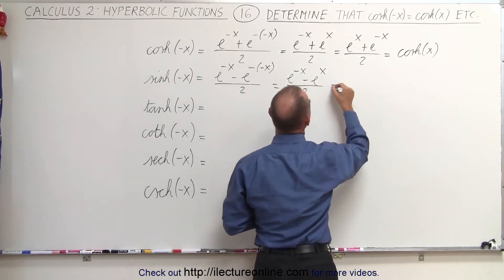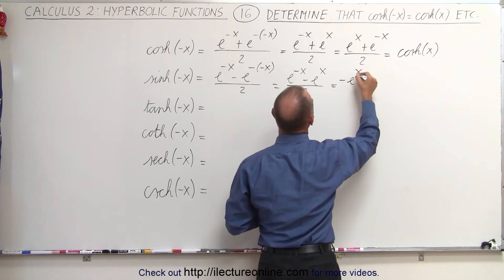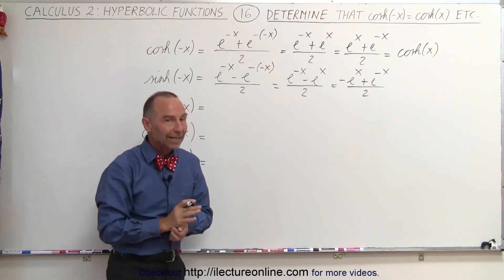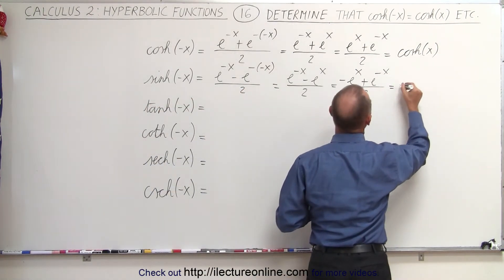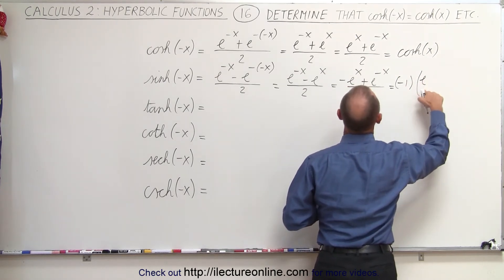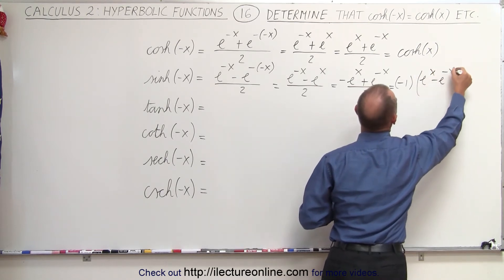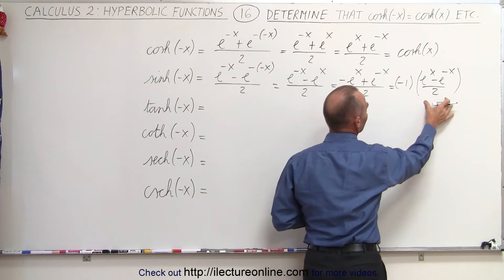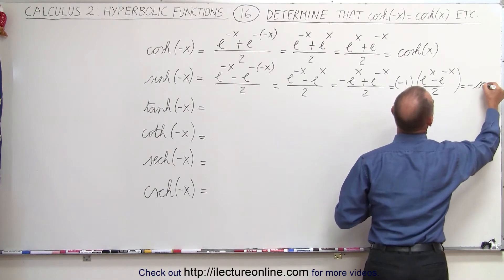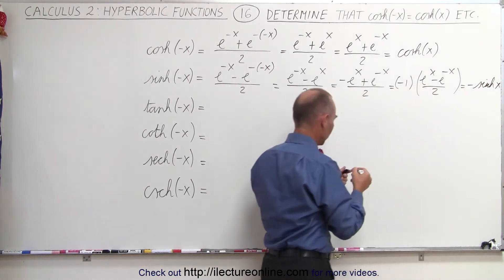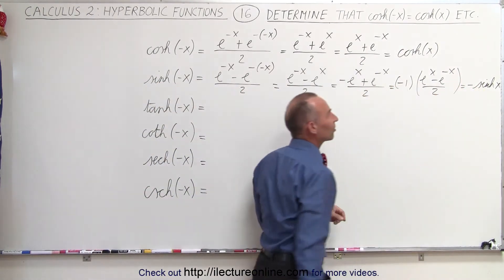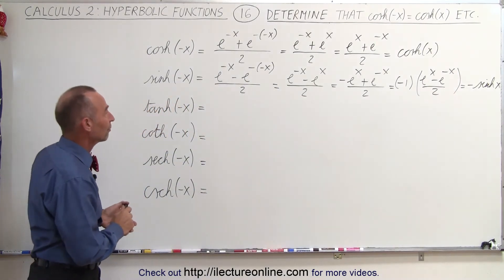When we switch them around, this becomes equal to minus e to the x plus e to the minus x, divided by 2. And then if we factor out a negative 1, this becomes negative 1 times e to the x minus e to the minus x, divided by 2. And of course this is exactly equal to the hyperbolic sine of x, so this becomes minus the hyperbolic sine of x. The hyperbolic sine of a negative x is equal to the negative of the hyperbolic sine of x, exactly the same as it is with trigonometric functions.